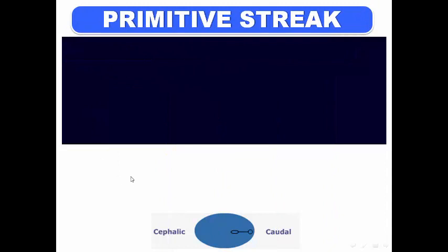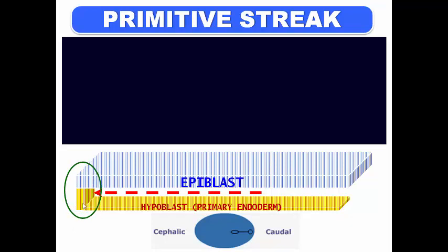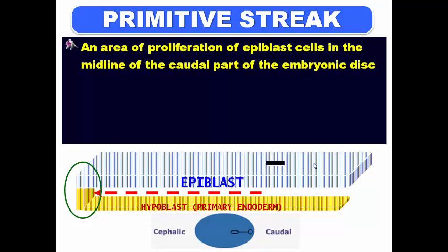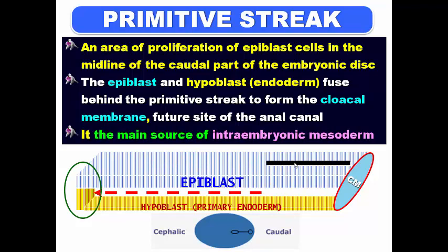The primitive streak is a proliferation of the caudal part of the epiblast in the midline; it appears as a dark line. The epiblast and hypoblast caudal to the primitive streak fuse to form another membrane — the cloacal membrane — which is the future site of the anal canal. The primitive streak is the main source of intra-embryonic mesoderm; therefore the intra-embryonic mesoderm is derived from the epiblast.